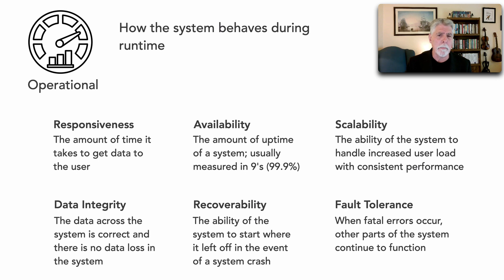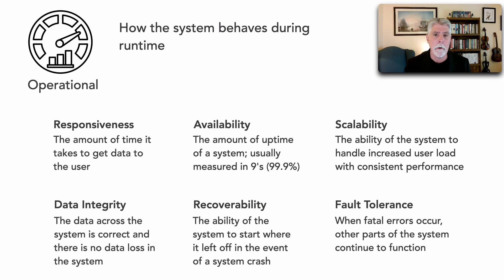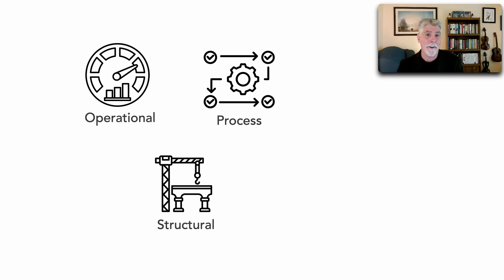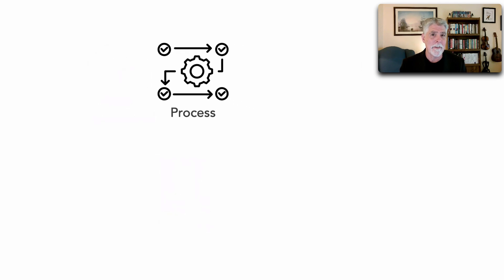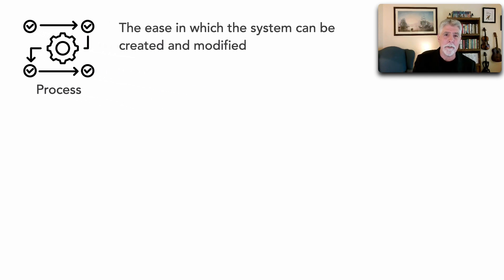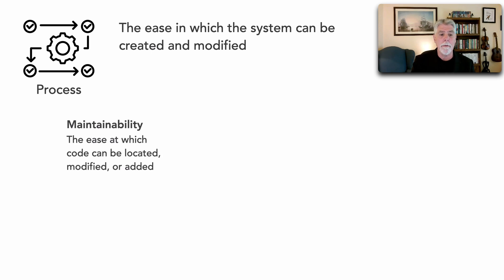Those are all really good examples of operational characteristics. There are lots of others — performance, elasticity, reliability — but those are good representative examples of runtime behavior. Now I want to show you a completely different category: process characteristics. Process-based characteristics are still architectural in nature, but they describe the ease with which the system can be created and also modified. Some of the very common ones within process are maintainability — one definition being the ease at which code can be located, modified, or even added, and how easy it is to change and understand our source code.